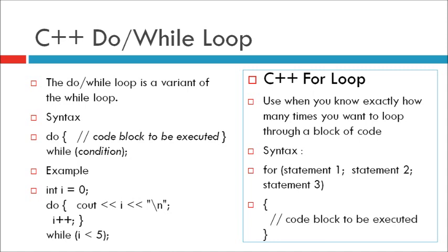Now see the C++ For Loop. When you know exactly how many times you want to loop through a block of code, use the for loop instead of the while loop. Syntax: for (statement 1; statement 2; statement 3) { code block to be executed }.